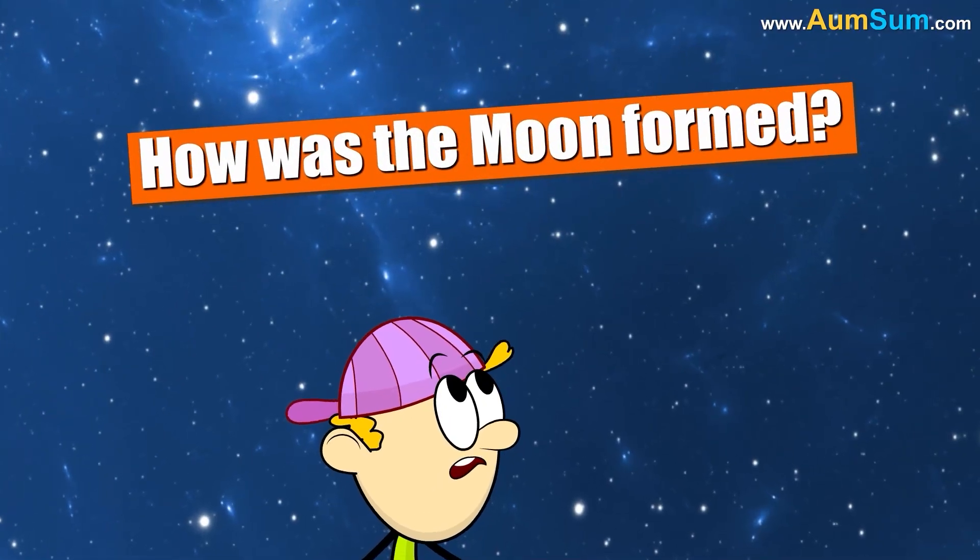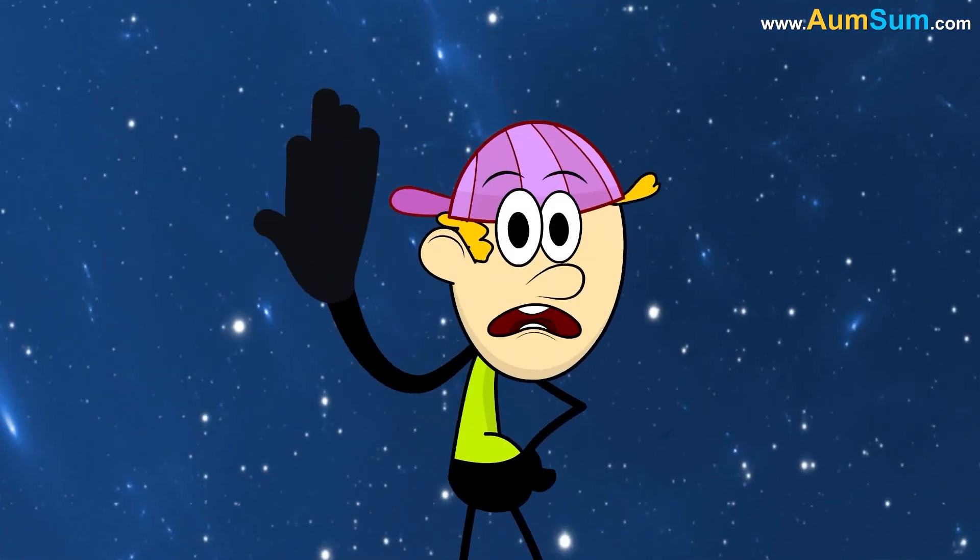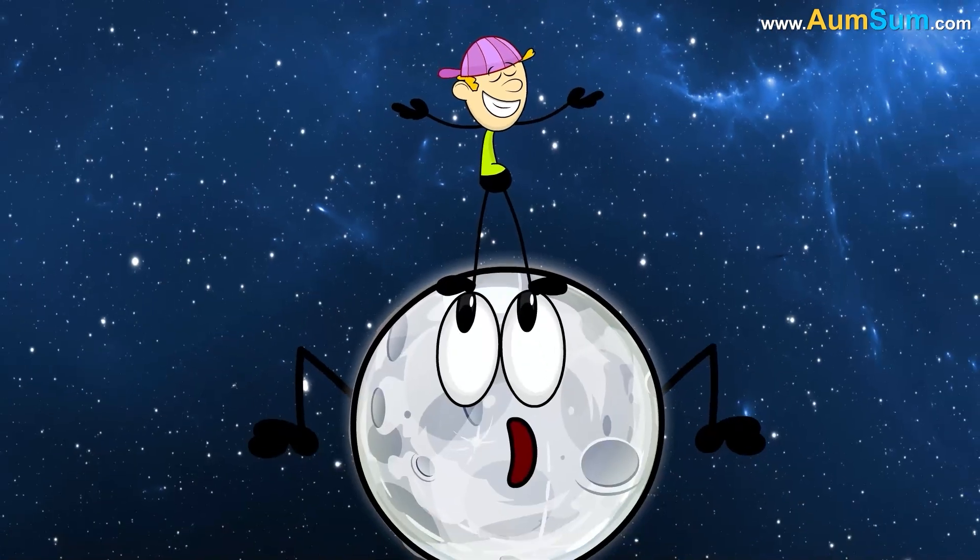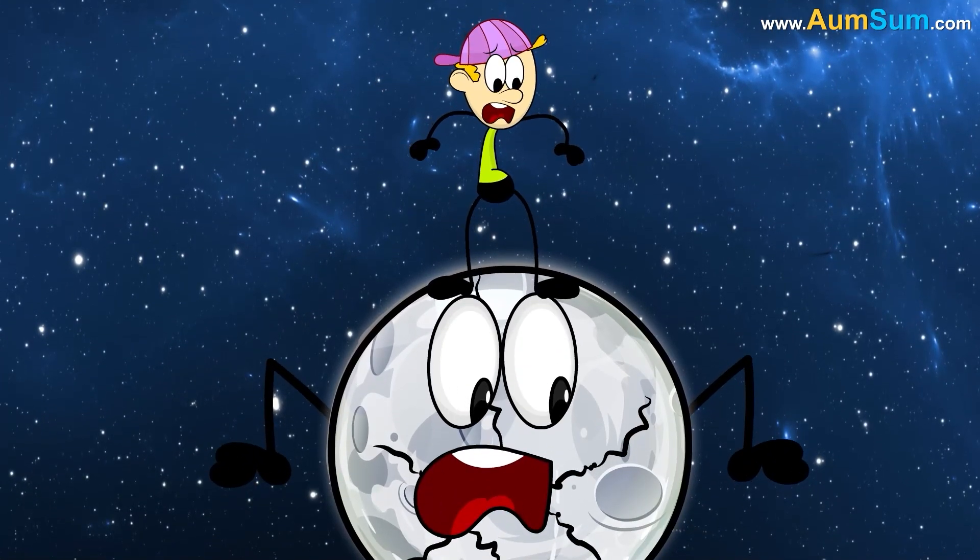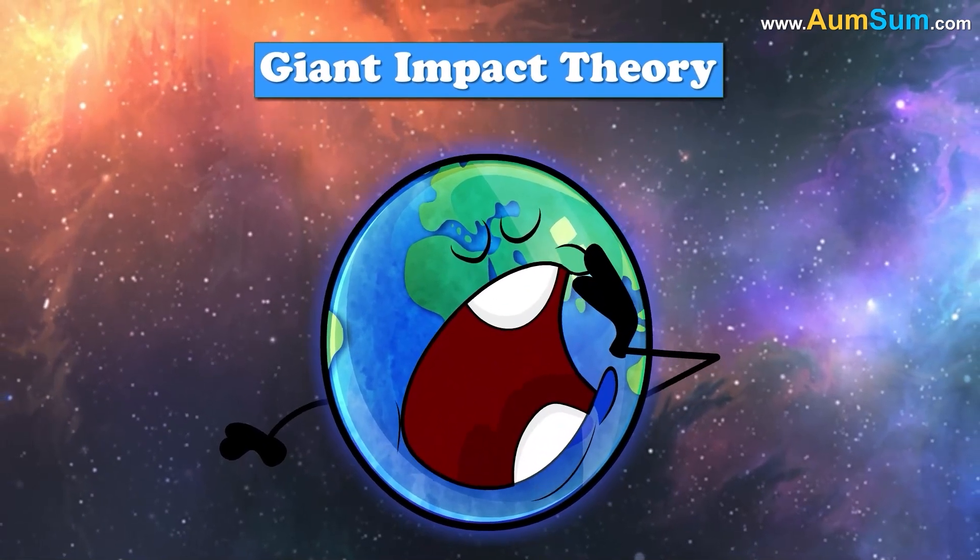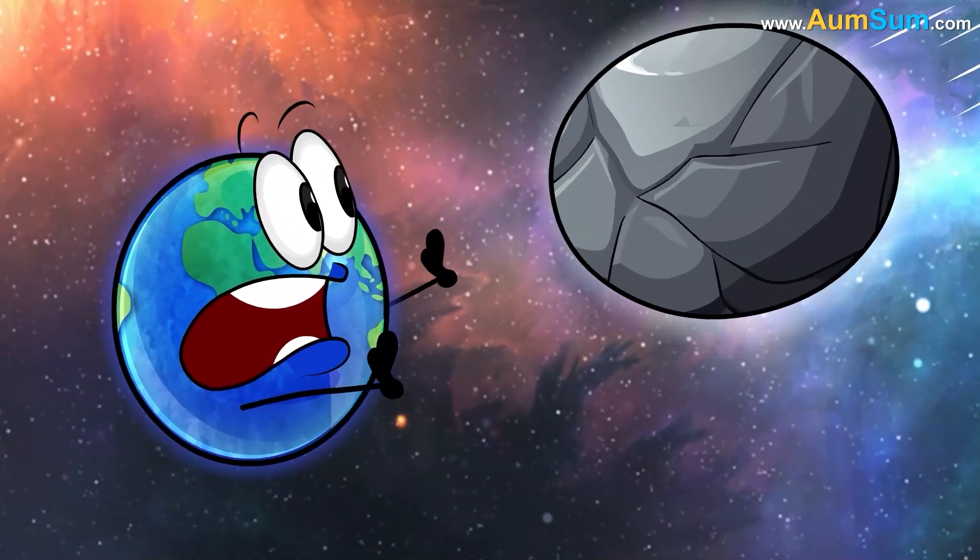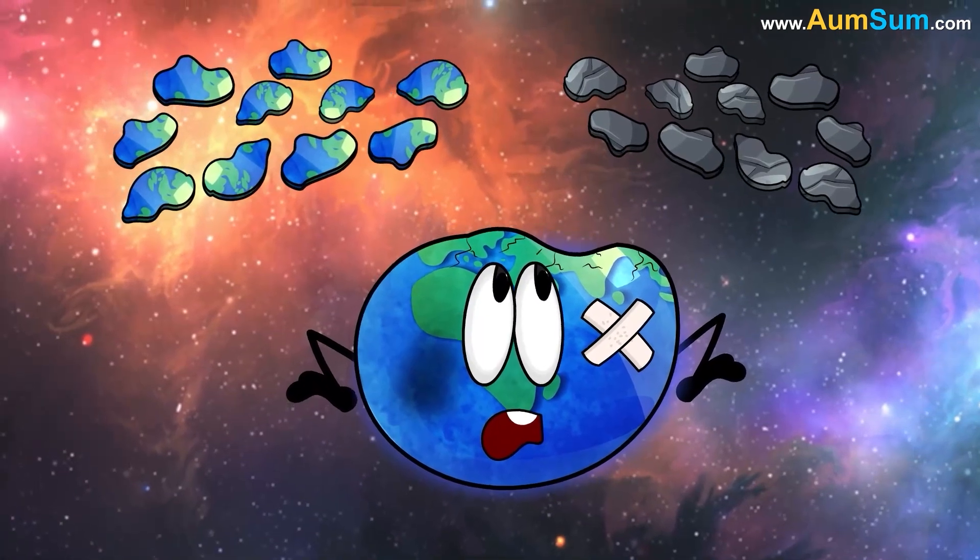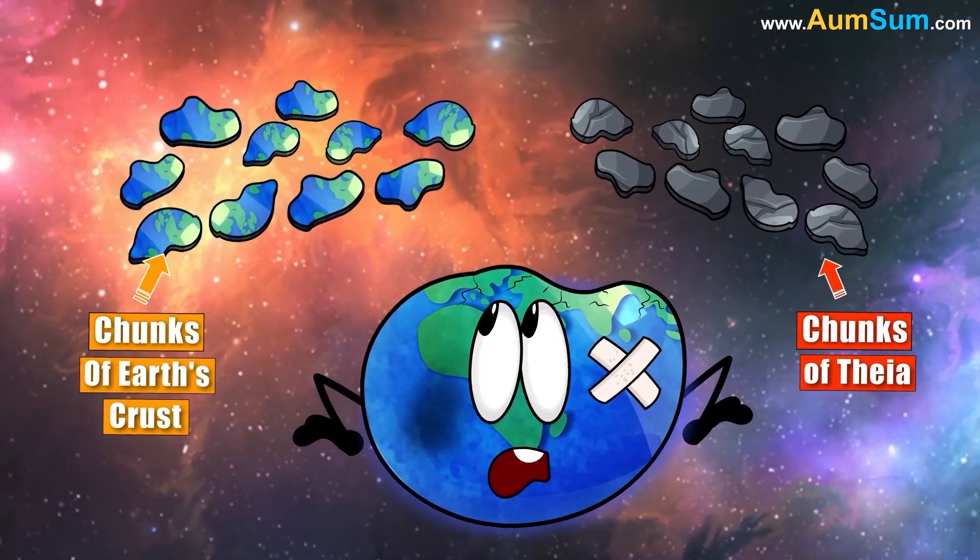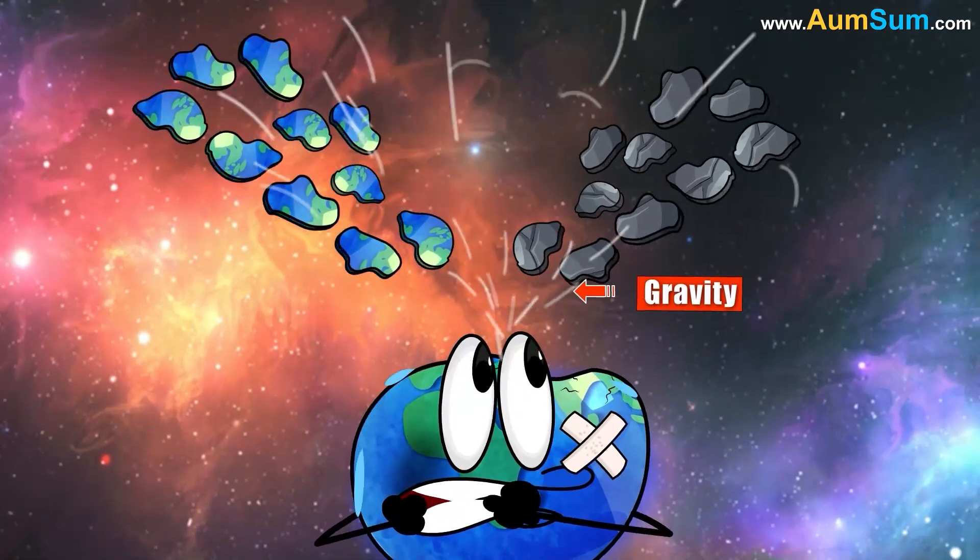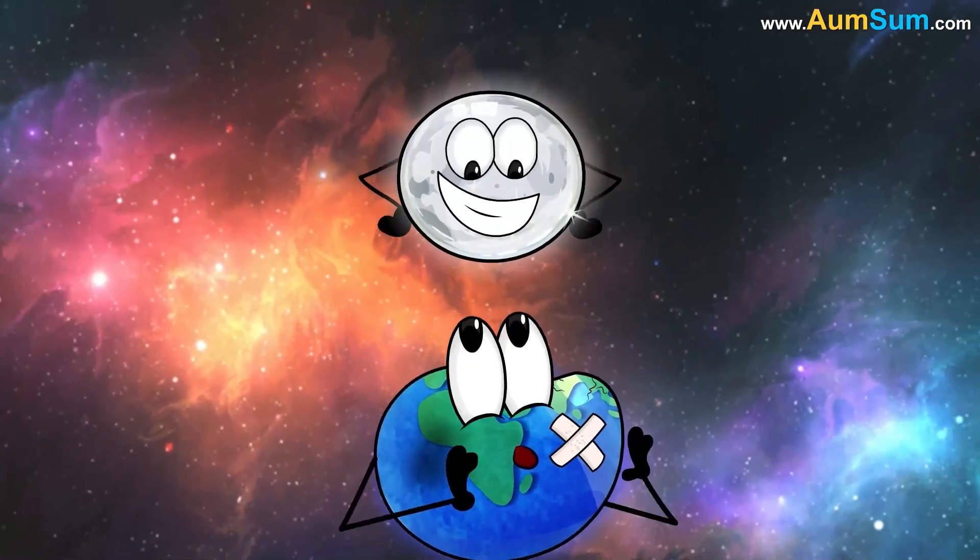How was the moon formed? According to the giant impact theory, Theia, a Mars-sized body, collided with Earth. This collision threw chunks of Theia as well as chunks of Earth's crust into space. Now, gravity bound these ejected chunks and led to the formation of our moon.